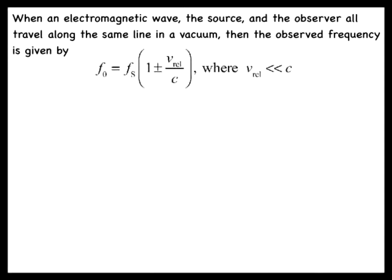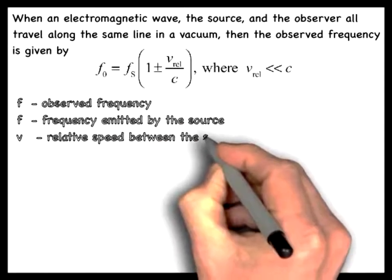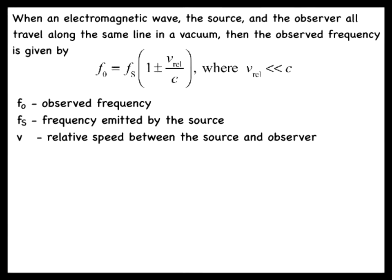In this expression, f₀ is the observed frequency, and fₛ is the frequency emitted by the source. The symbol v_rel stands for the speed of the source and the observer relative to one another, and c is the speed of light in vacuum.